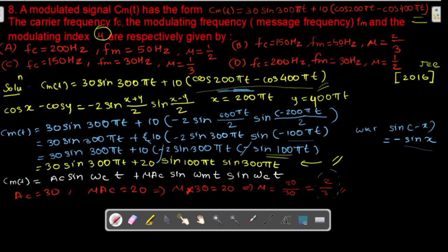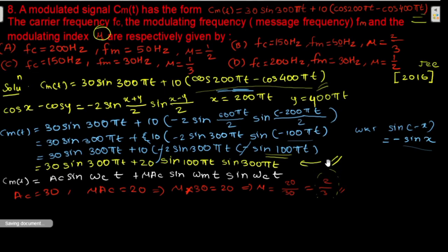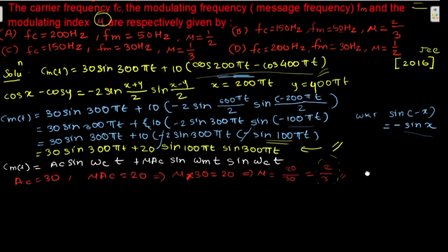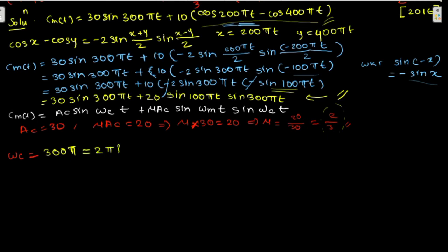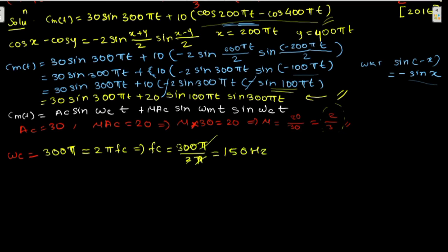Now we find the carrier frequency. From the equation, ωc = 300π, and since ωc = 2πfc, we get fc = 300π / (2π) = 150 Hz. So the carrier frequency fc is 150 Hz.